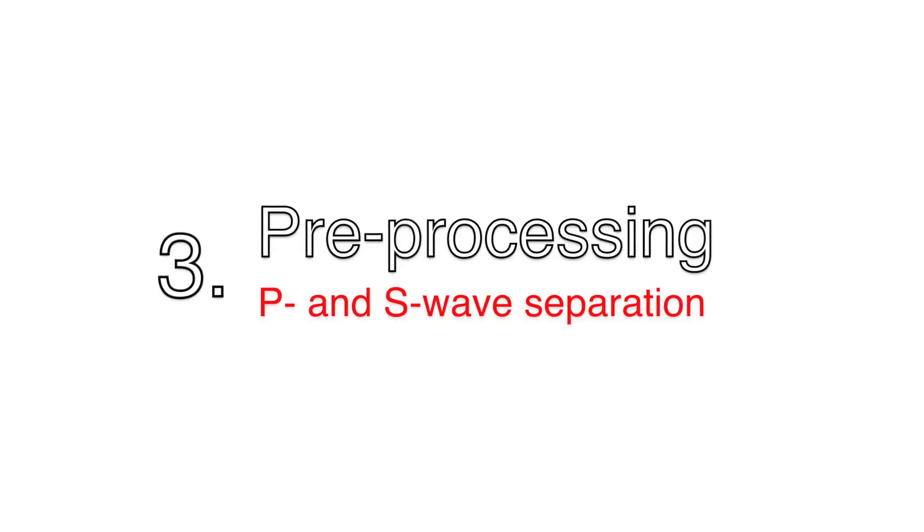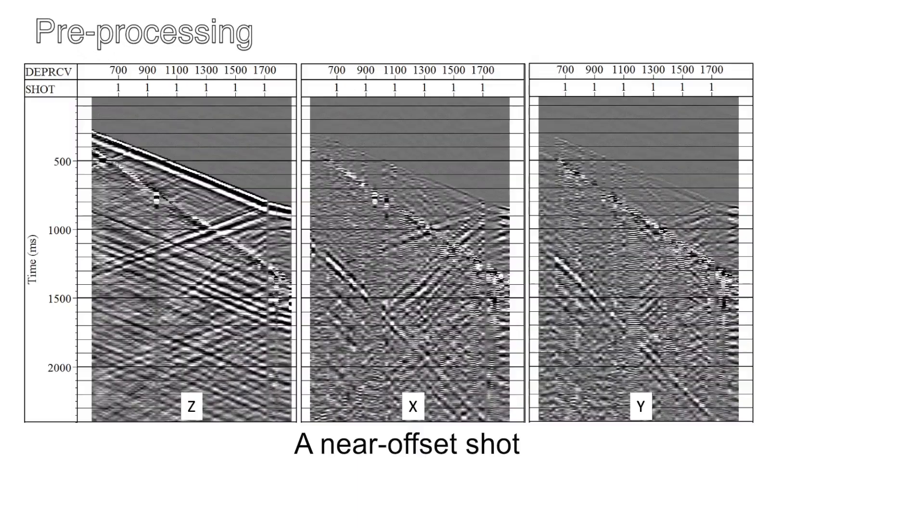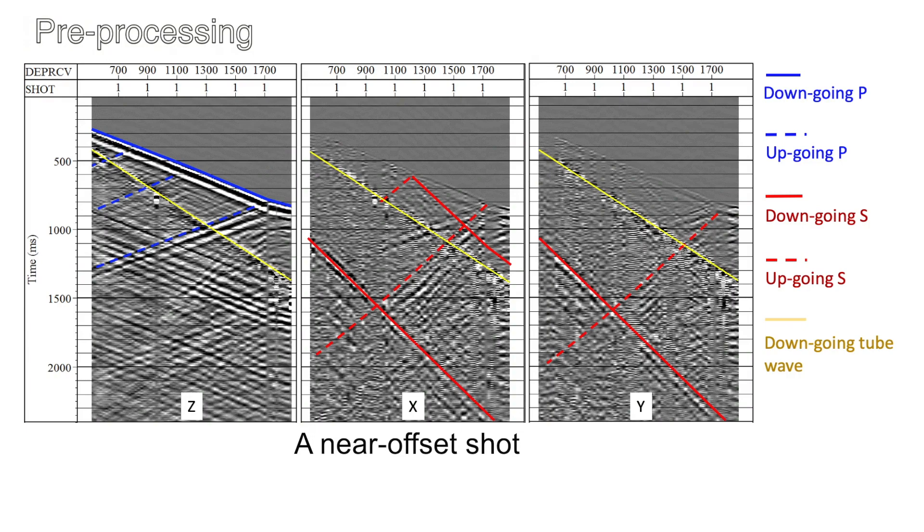Next, we'll get into the data preparation with an emphasis on the wave field separation. Let's first look at the three component raw shot gathers that we're about to process. Downgoing P and S and upgoing P and S as well as the tube waves are highlighted. The task of the preprocessing is to separate P and S in their upgoing and downgoing fields and suppress noises such as the tube waves, multiples, etc. We follow a classic VSP preprocessing flow to prepare the data with a careful touch on the P and S wave field separation.